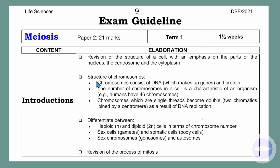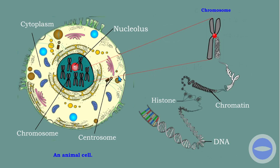Another thing we will be focusing on is the structure of the chromosome, which we studied in Grade 10. A chromosome consists of DNA, which makes up genes, and protein. This is a chromosome inside the nucleus. When we zoom in, this is one chromosome, and a chromosome is made up of protein and DNA. DNA contains a double strand, and this DNA is wrapped around a histone — histone is a protein.